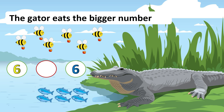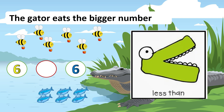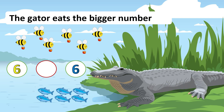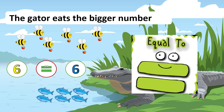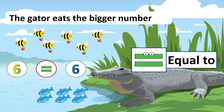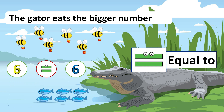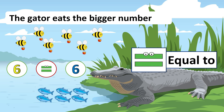What is the symbol that we're going to use? Do you think it's greater than? Less than? No! We're going to use equal to, because six is equal to six. This symbol is equal to. We use this symbol if they have the same number. We say six is equal to six.